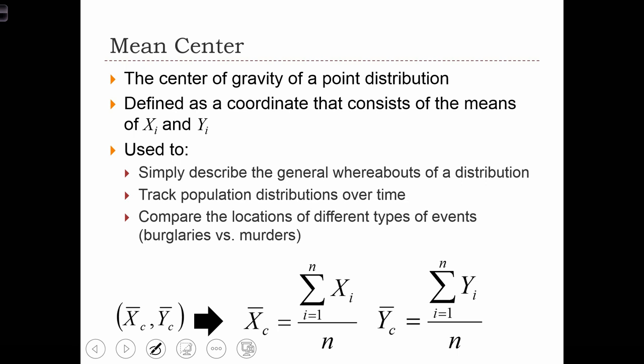For example, what if we were to compare a point distribution of burglaries in the city versus a point distribution of murders in the city? The mean center would tell us the general whereabouts of where the murders are taking place and we can compare that to the general whereabouts of where the burglaries are taking place.